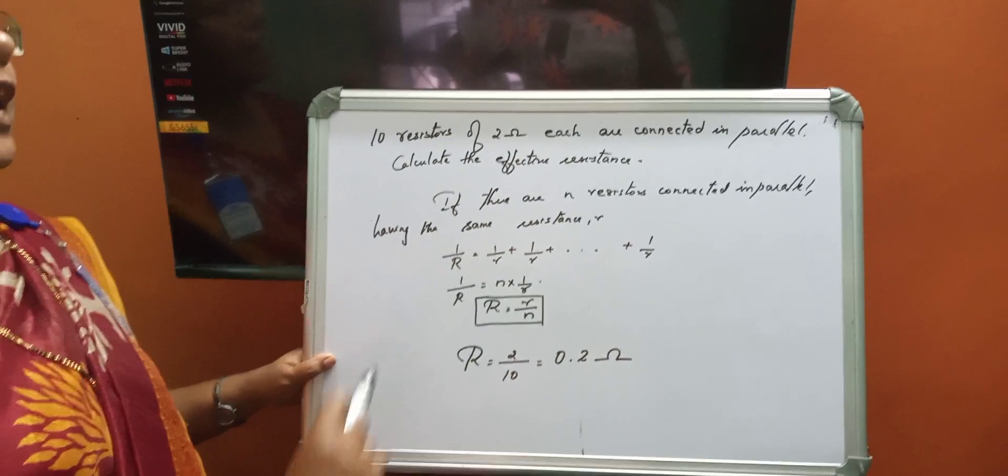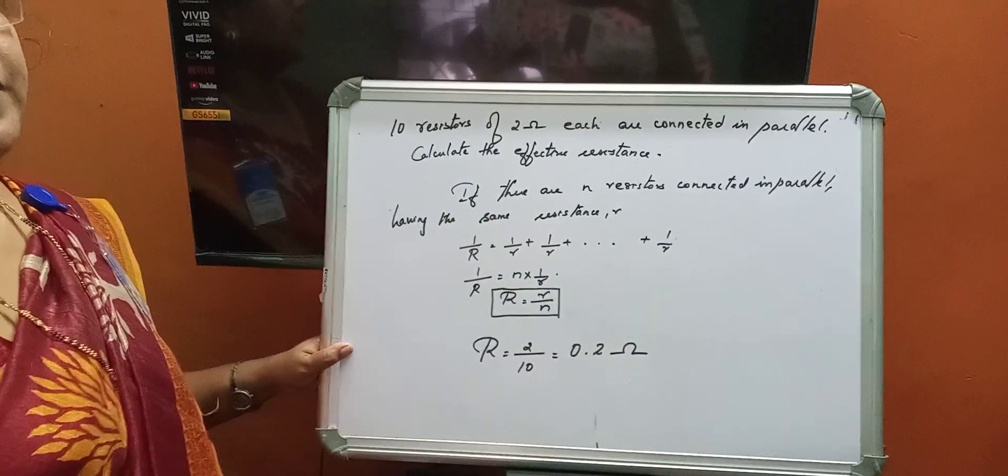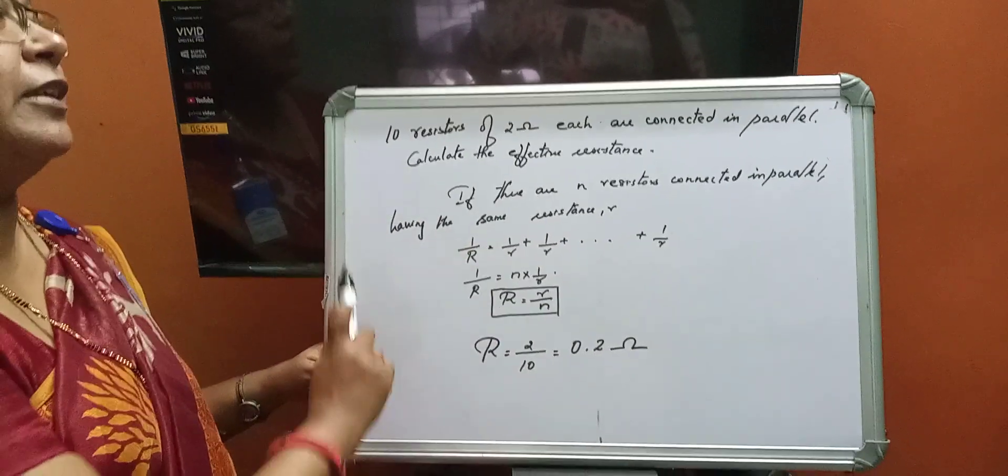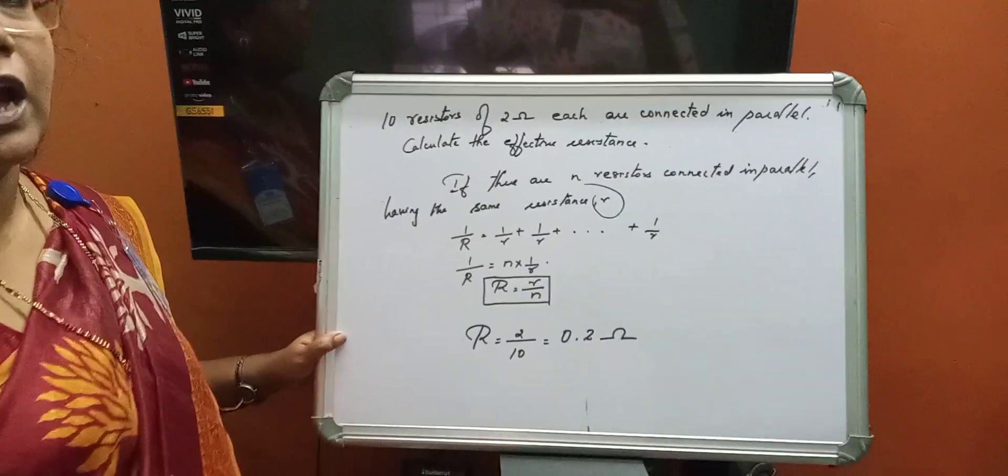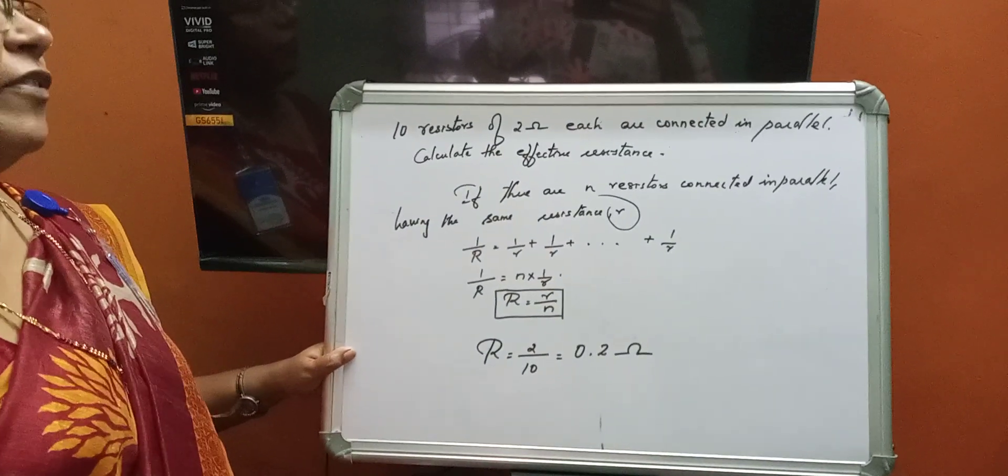Suppose, consider there are n resistors and the n resistors each have the same resistance and that same resistance let it be small r. So, how will you find the effective resistance?